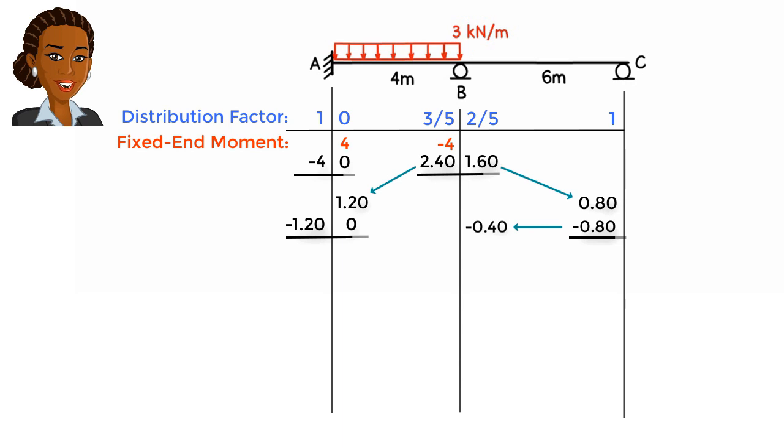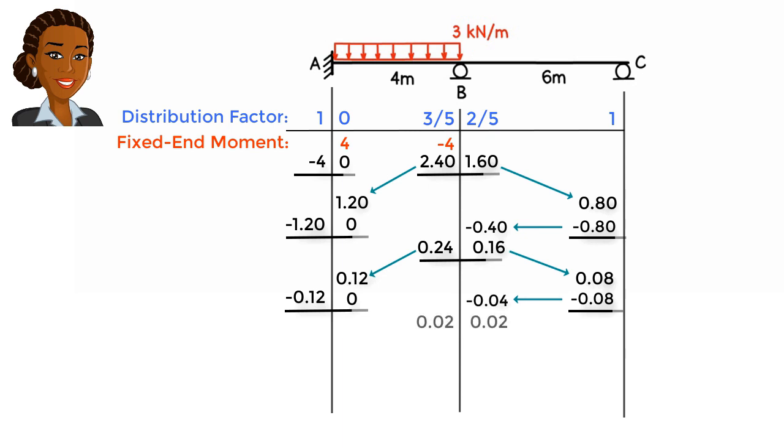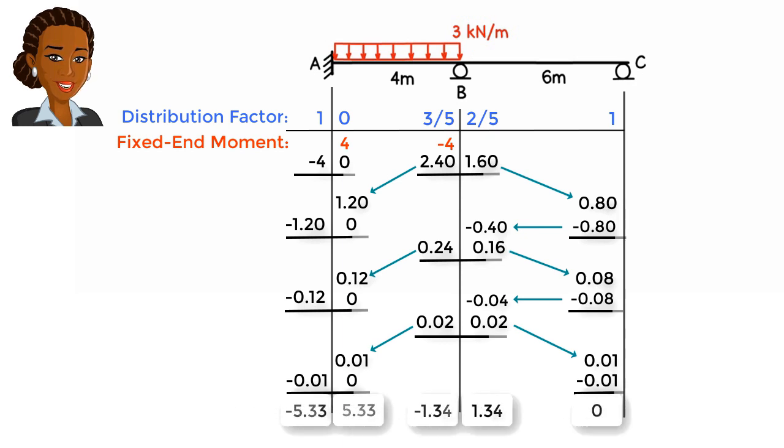It is time to balance joint B again. Then, we carry over half of each balancing moment. After a few more iterations, the moment values become negligible, signaling the end of the process. We then add up the values in each column to determine the member end moments.